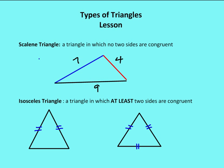A scalene triangle is a triangle in which no two sides are congruent. In the example under the scalene triangle figure, I have a triangle with a length of four, a length of seven, and a length of nine. None of those sides are congruent, so this is a scalene triangle.